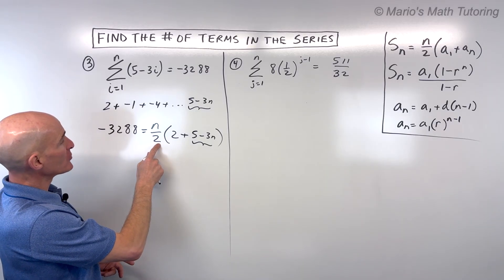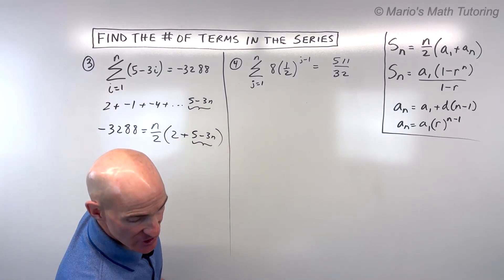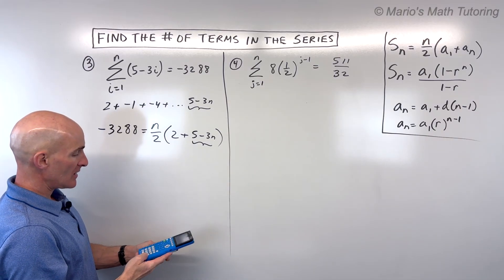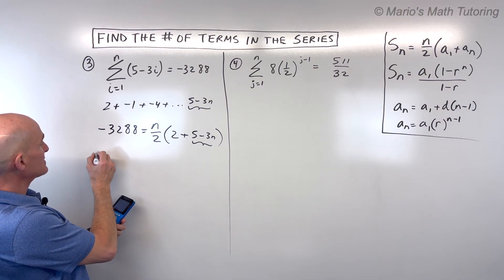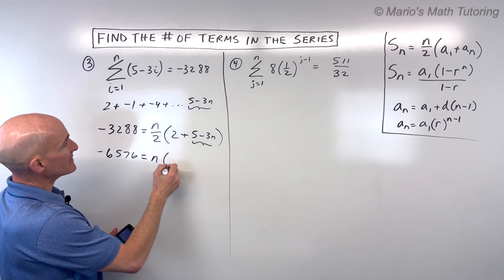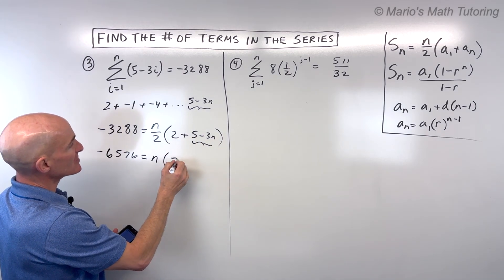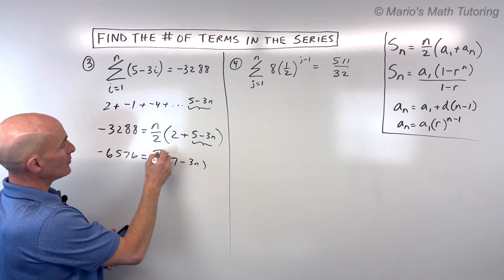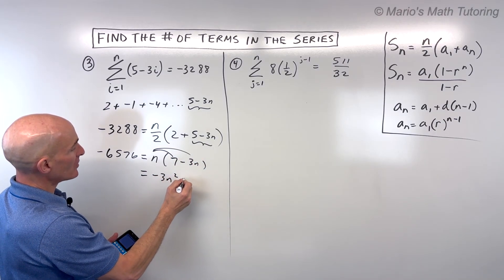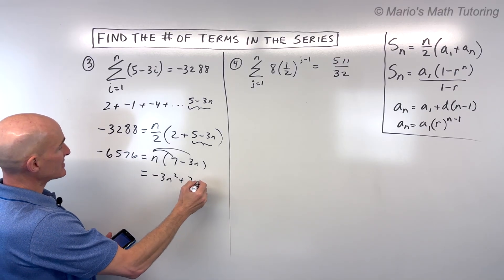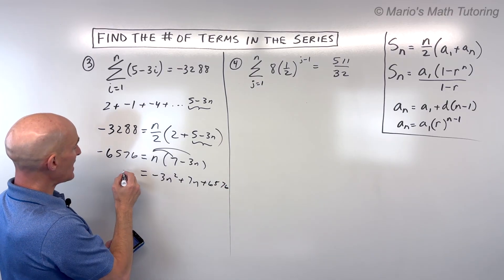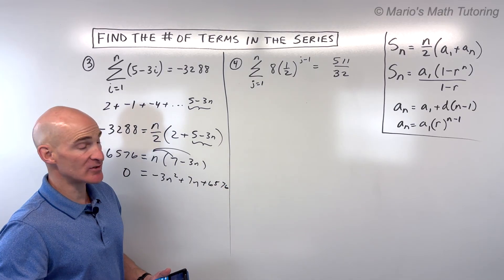So I'm going to multiply both sides by 2 just to get rid of this fraction here. So that comes out to negative 6,576. And then this over here is n times, now let's combine some like terms here. This is 7 minus 3n. We can distribute the n. So that would give us negative 3n squared plus 7n. And I'm going to add the 6,576 to the other side so I can get everything on one side and set it equal to 0.